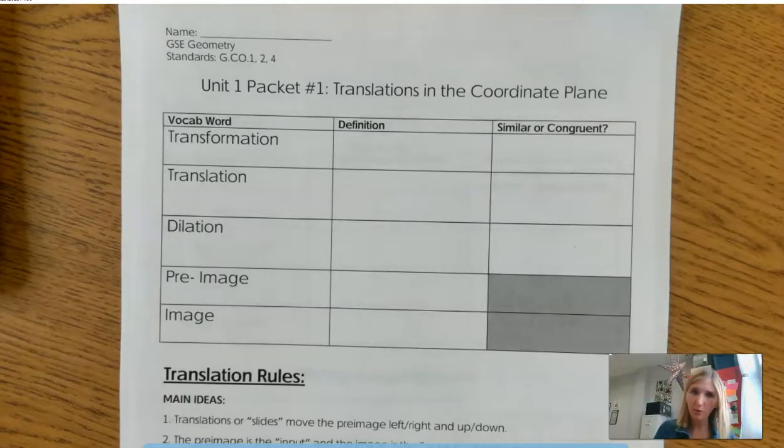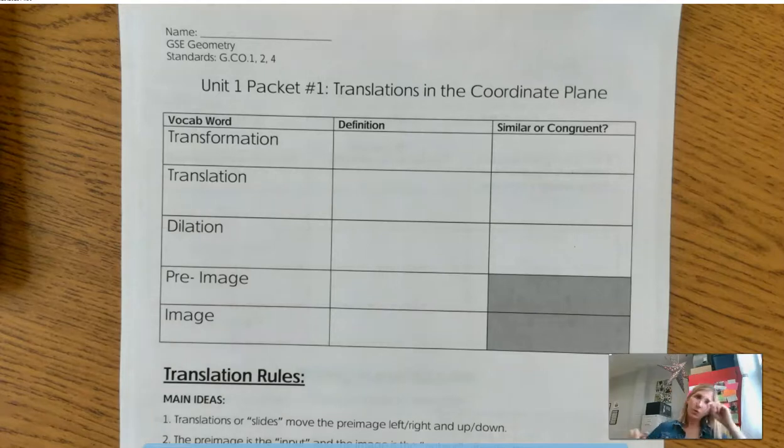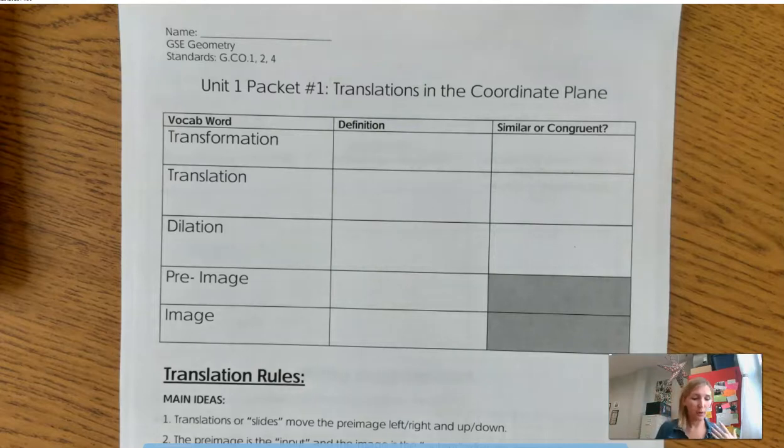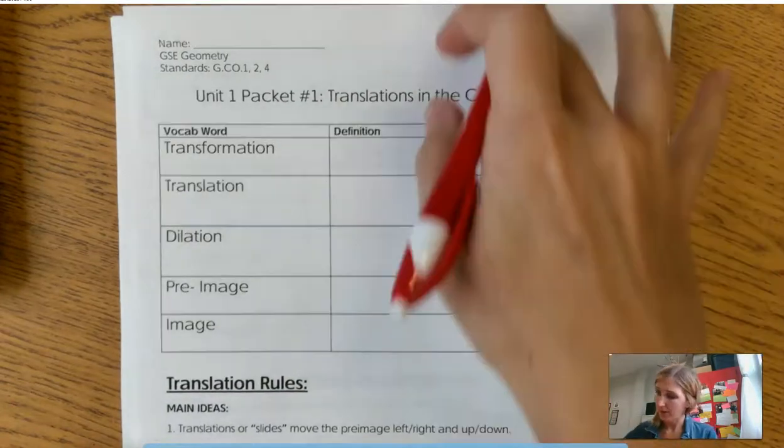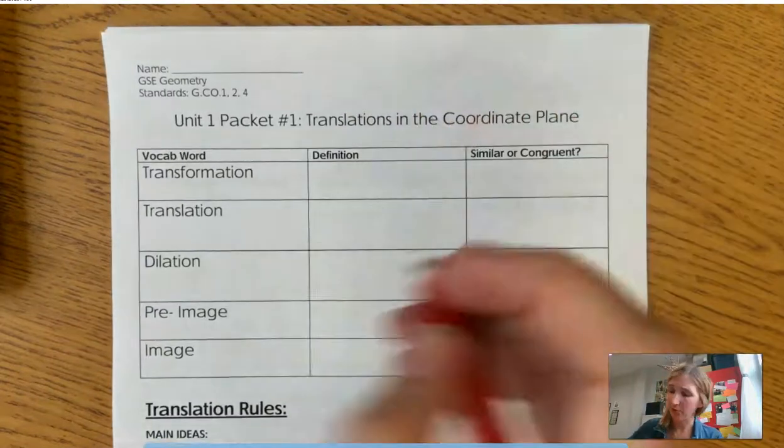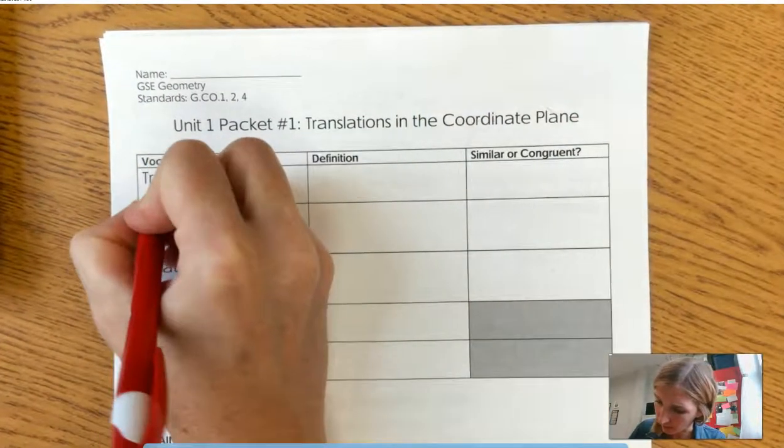Alright. So when you open up the notes, they should look like this. Unit 1, in general, is all about transformations. What are transformations? Basically, you're taking something and you're changing it in some way. Specifically, four ways that we're going to talk about. So there's four different types of transformations. I'm going to go ahead and write a quick note: four different types.